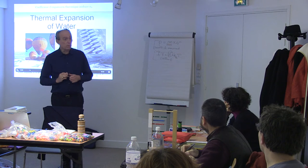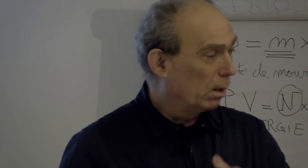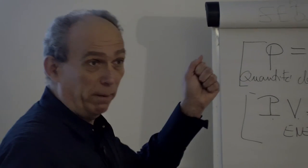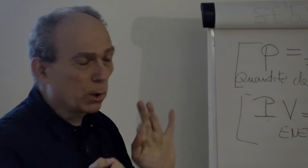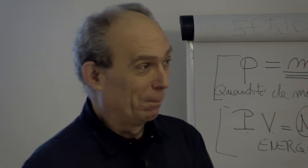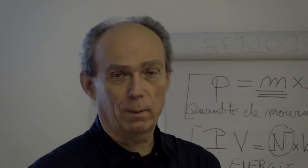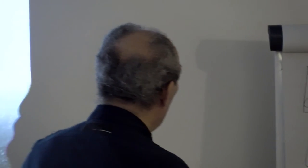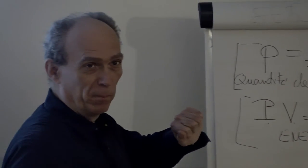Donc, si c'est l'aspect énergétique qui vous intéresse d'un phénomène, vous devez raisonner en nombre. Si c'est l'aspect quantité de mouvement, c'est la masse. Il faut bien comprendre qu'on a ces deux choses. Et ce qui est troublant, c'est que les deux mesurent la quantité de matière. Mais il faut savoir ce qu'on veut faire de cette matière.